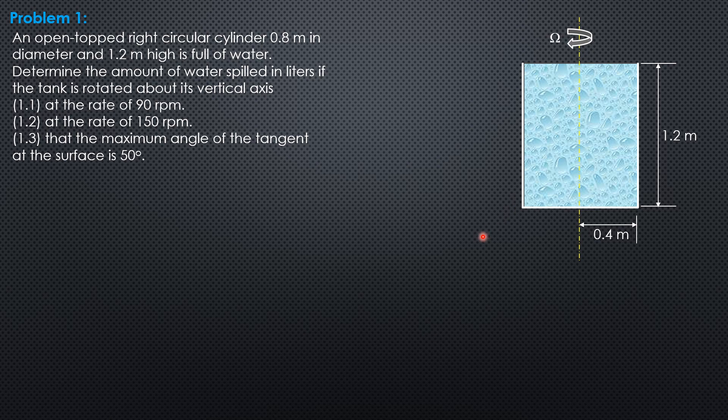So first, let's solve for the height because definitely because the tank is open and full, so certain amount of water will be spilled. So H is 0.0005589 omega square R square when the given angular speed is in RPM. So H1 is 0.0005589 times 90 square times 0.4 square. So H1 is 0.7243 meter which is less than 1.2.